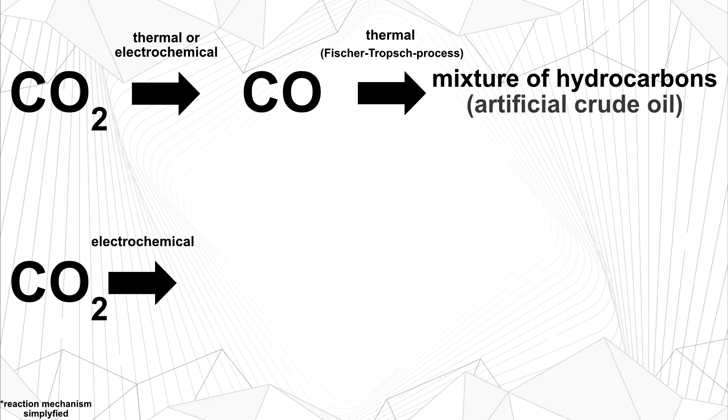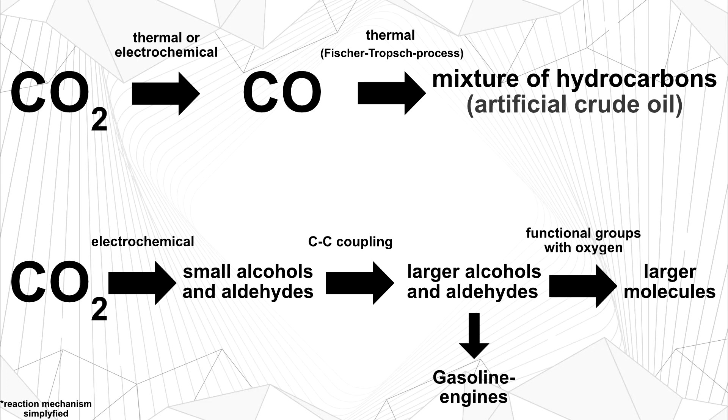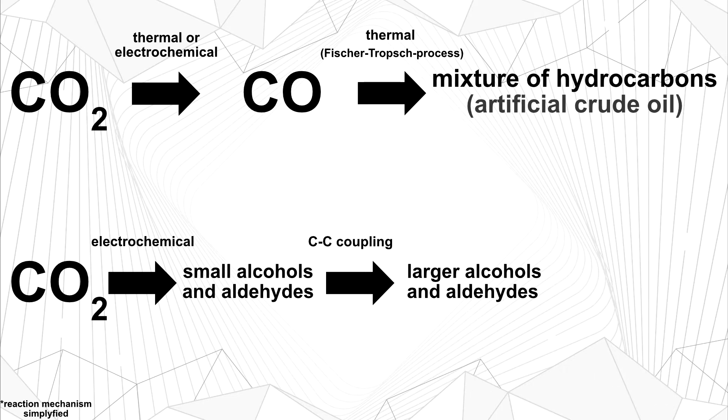First, we electrochemically convert CO2 into small alcohols or aldehydes with at most three carbon atoms. Then we connect multiple of these smaller molecules together by forming new carbon-carbon bonds, creating larger molecules in the process. Some of these can then already be used as fuel, but we can also further connect these via functional groups containing oxygen. The advantage of this pathway is that electrons are transferred electrochemically. The challenge, however, is that it is difficult to pull off. There are three steps here. The third one is relatively easy, so we won't talk about this step. It's the first two where things start to get tricky.